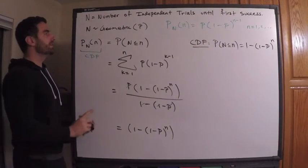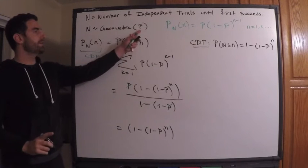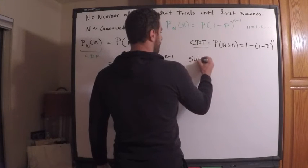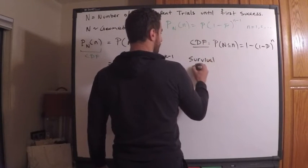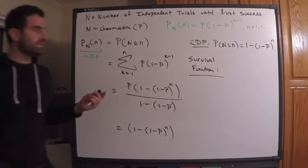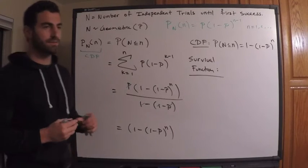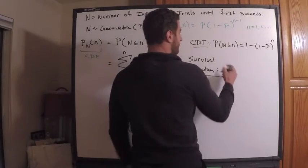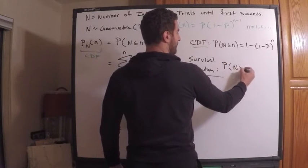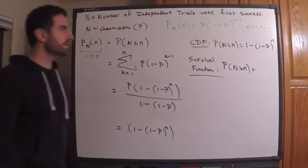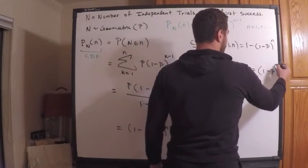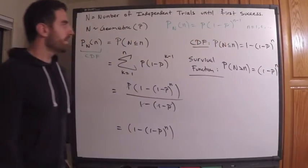The survival function, which is just 1 minus the CDF, is S sub N of n — the complement. This is the probability that N is greater than n, and it equals 1 minus p to the n. A bit nicer than the CDF.